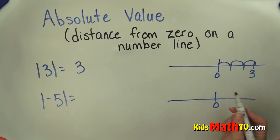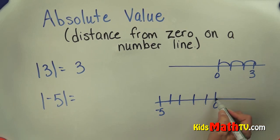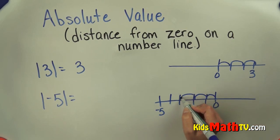Okay, if we plot negative five: one, two, three, four, five. There's negative five. How many spaces from zero is this? One, two, three, four, five. It's five spaces.